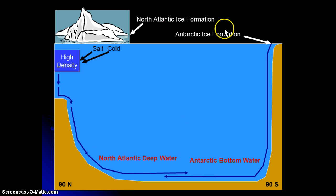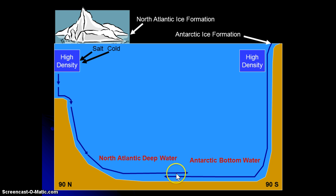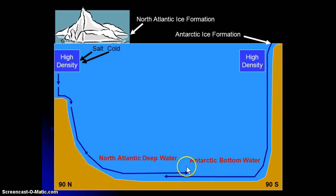It also happens in parts of the Antarctic, where it's super cold and gets super salty. So we get this high density water continually, always forming, always sinking, always traveling the seafloor. It's actually colder and saltier in the Antarctic than in the Arctic, so it's heavier than the North Atlantic Deep Water. It'll actually run underneath the North Atlantic Deep Water — they layer on top of each other.